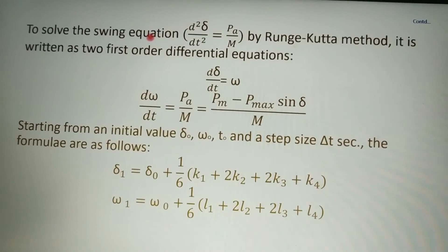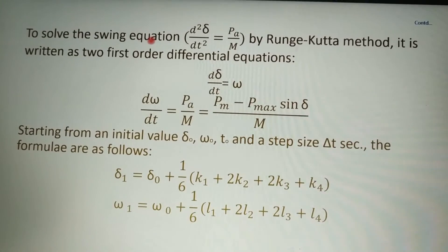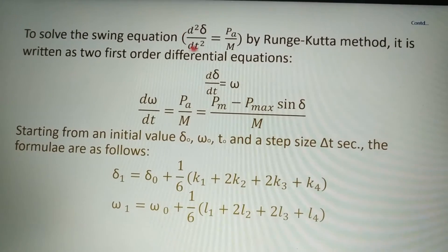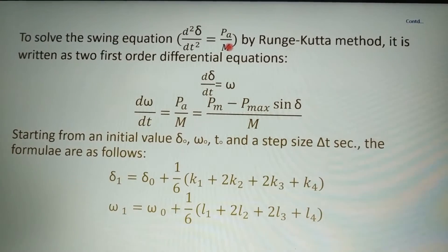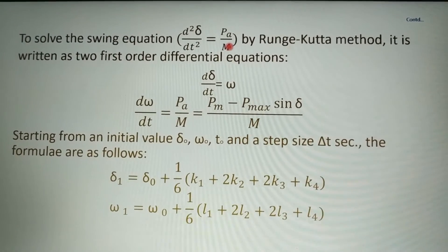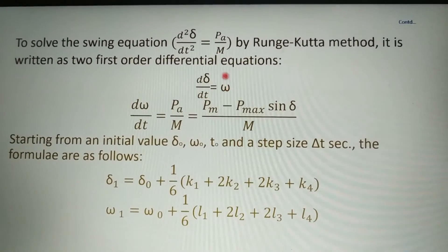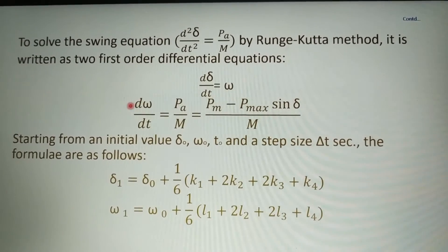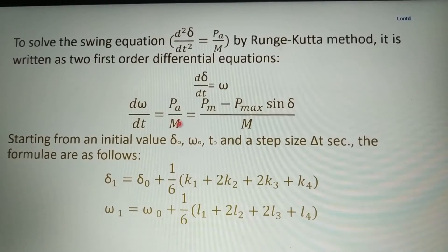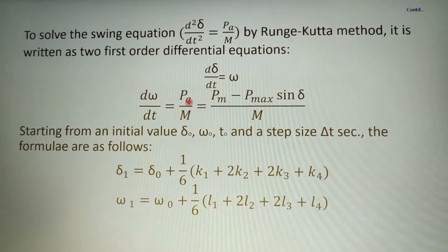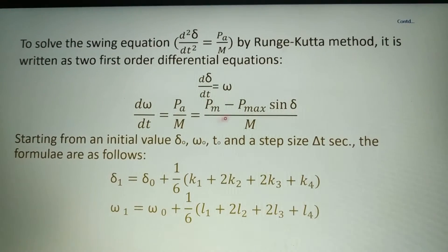Now applying the Runge-Kutta method to the swing equation: the swing equation is d²δ/dt² = Pa/M. We rewrite this as two first-order differential equations: the first is dδ/dt = ω, and the second is dω/dt = Pa/M, where Pa = Pm − Pe and Pe = Pmax·sin(δ).